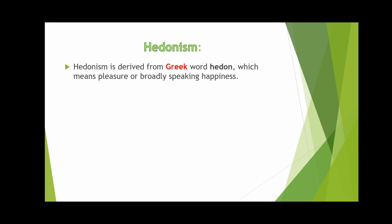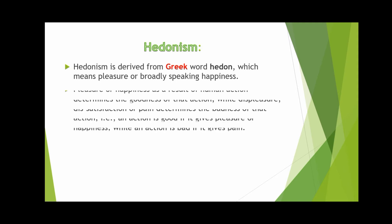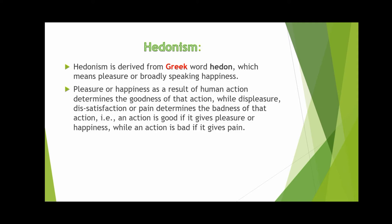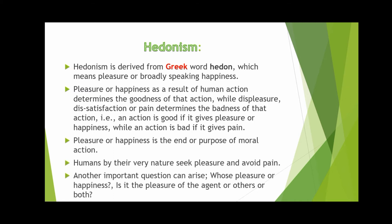Hedonism is derived from the Greek word hedon, which means pleasure or, broadly speaking, happiness. Pleasure or happiness as a result of human action determines the goodness of that action, while displeasure, dissatisfaction or pain determines the badness of that action. For example, an action is good if it gives pleasure or happiness, while an action is considered bad if it gives pain to the doer. Pleasure or happiness is the end or purpose of a moral action.